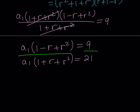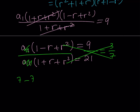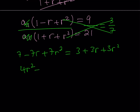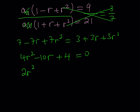Cross-multiplying gives 7(1 − r + r²) = 3(1 + r + r²), which expands to 7 − 7r + 7r² = 3 + 3r + 3r². Collecting everything on one side yields 4r² − 10r + 4 = 0. Dividing both sides by 2 gives 2r² − 5r + 2 = 0.